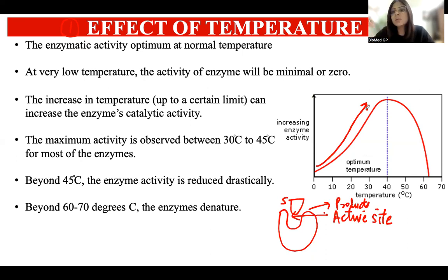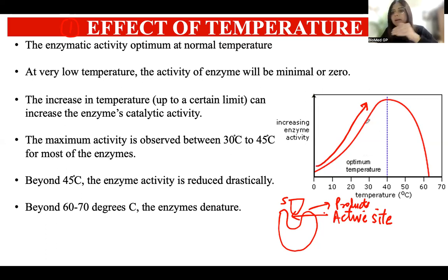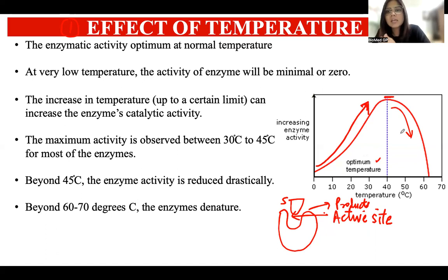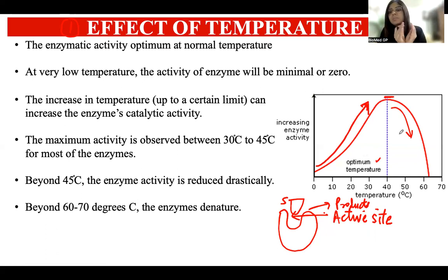However, this increase in enzyme activity only continues up to a certain temperature. Once a specific temperature — known as the optimum temperature — is reached, further increases cause the enzyme activity to decline. This is because very high temperatures disrupt the bonds holding the active site intact, causing the active site to lose its three-dimensional conformation and become unable to bind the substrate.